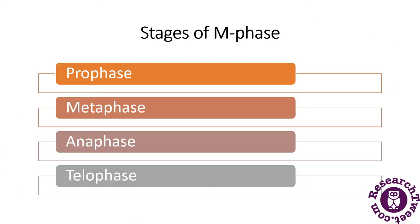The stages of mitosis begin with the M phase, which starts with nuclear division — karyokinesis or mitosis — corresponding to the formation of daughter nuclei, and usually results in division of the cytoplasm. It is a continuous process conventionally divided into four stages: prophase, metaphase, anaphase, and telophase.